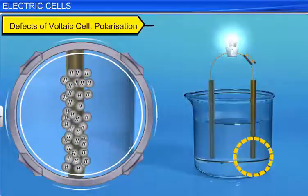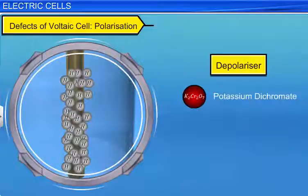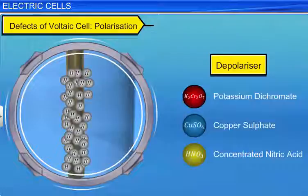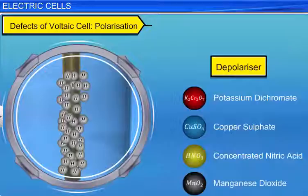Polarization can be reduced by using a suitable oxidizing agent called a depolarizer. Potassium dichromate, copper sulfate, concentrated nitric acid, and manganese dioxide are some chemicals used as depolarizers. These two defects reduce the EMF of the cell.